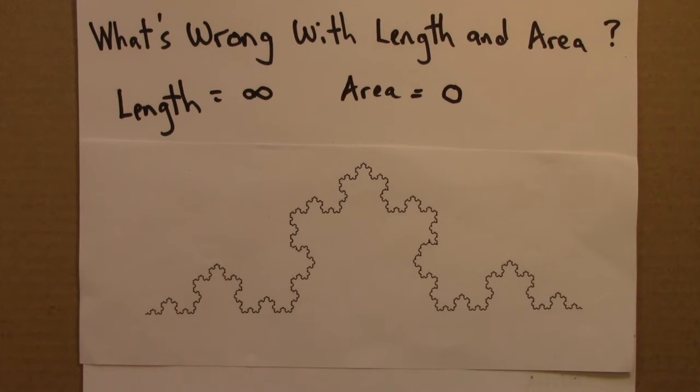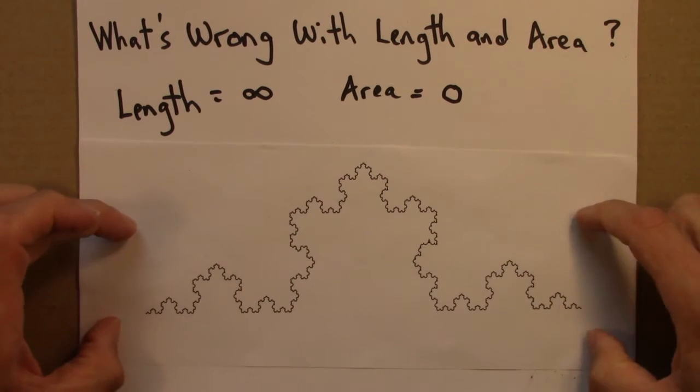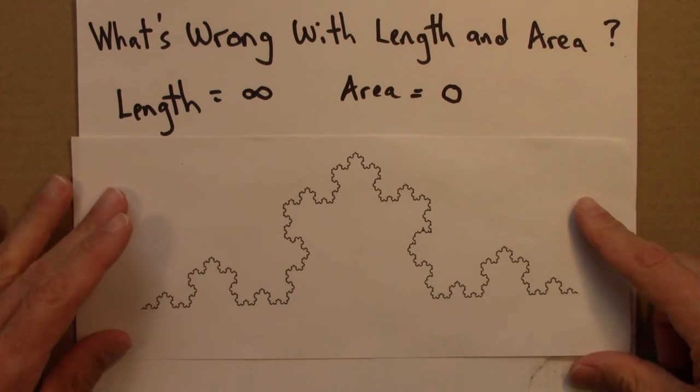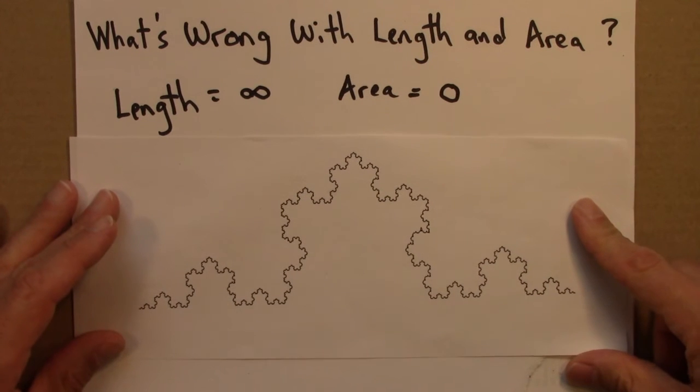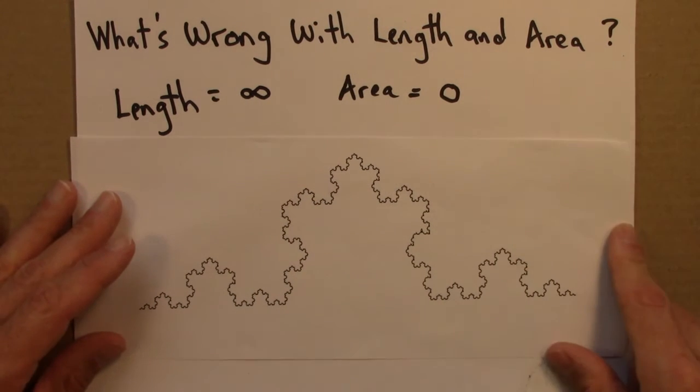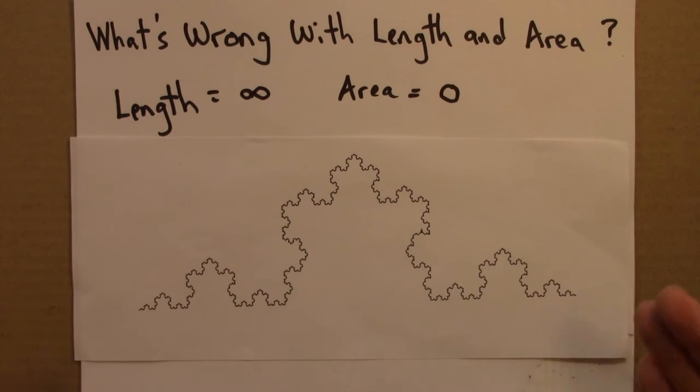So on the one hand, we've got, yes, it's a fractal, but it's a relatively straightforward geometric object. It's got some complications, but it seems like we ought to be able to do something mathematically with this.